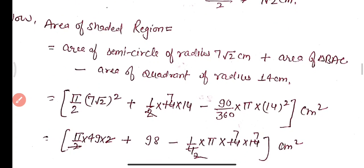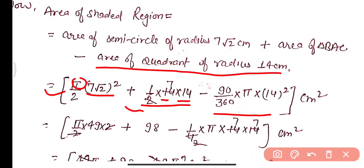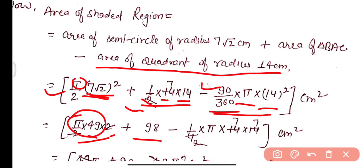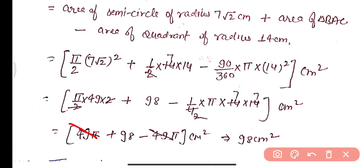Area of shaded region = area of semicircle of radius 7√2 + area of triangle − area of quadrant. Semicircle area = 1/2 × π × (7√2)² = 1/2 × π × 49 × 2 = 49π. Triangle area = 1/2 × 14 × 14 = 98. Quadrant area = 90/360 × π × 14² = 1/4 × π × 196 = 49π. The two 49π terms cancel, leaving the area of the shaded region = 98 cm².